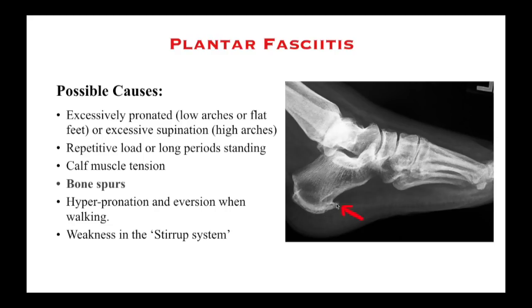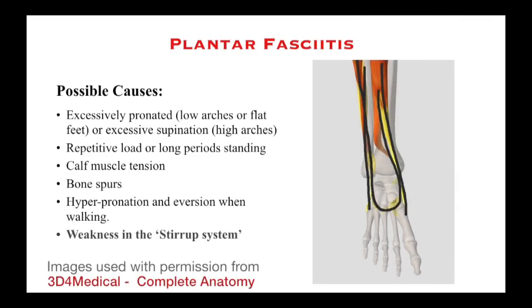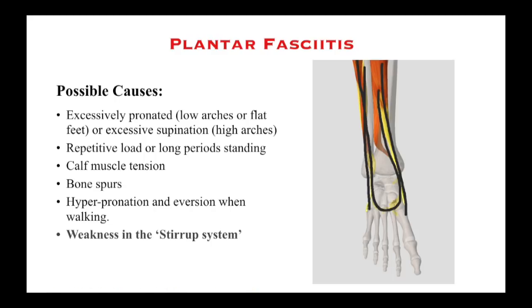These bone spurs are oftentimes considered to be very soft — not really true bone. Comparing these spurs to bone is like comparing tinfoil to sheet metal; they're quite soft and can often be broken up. We also see dysfunction in the stirrup system, which consists of four muscles providing lateral support to the foot. Anterior and posterior tibialis provide support to the inside of the arch, and the peroneal or fibularis muscles provide support to the outside. Dysfunction in these will cause excessive stresses through the foot.